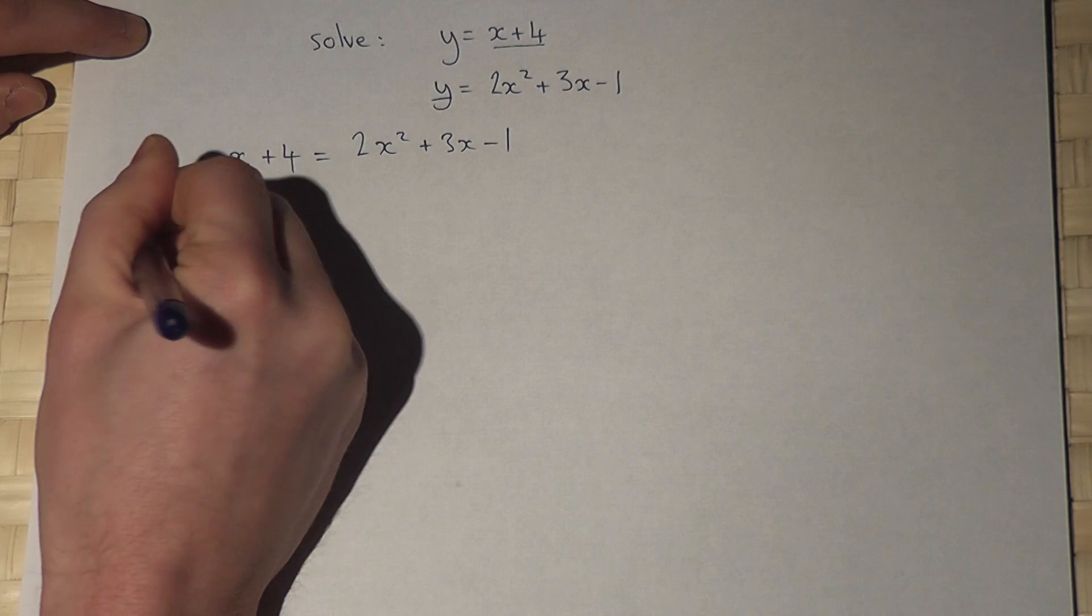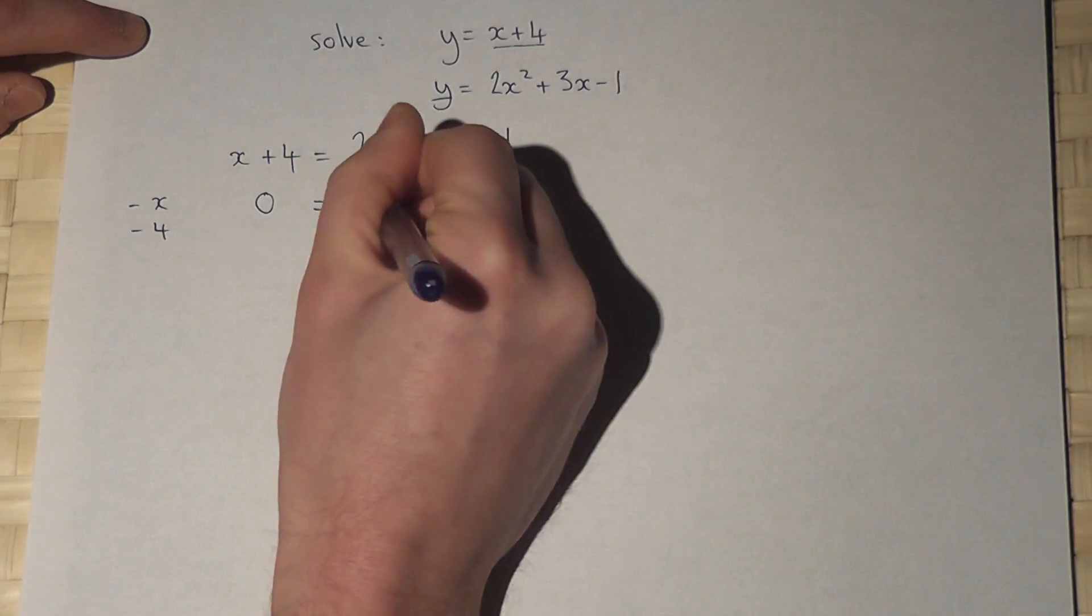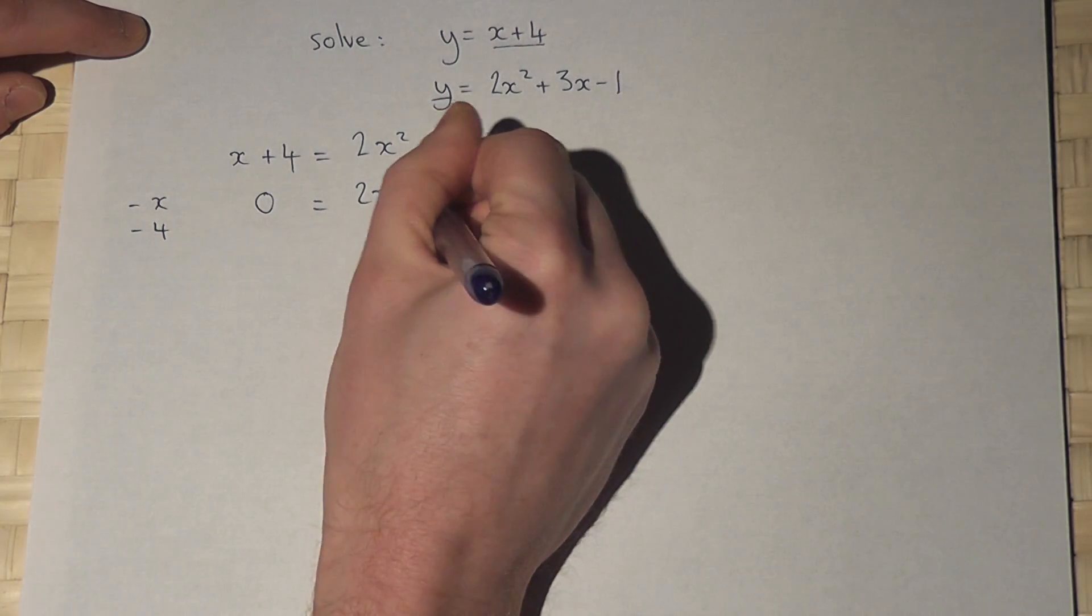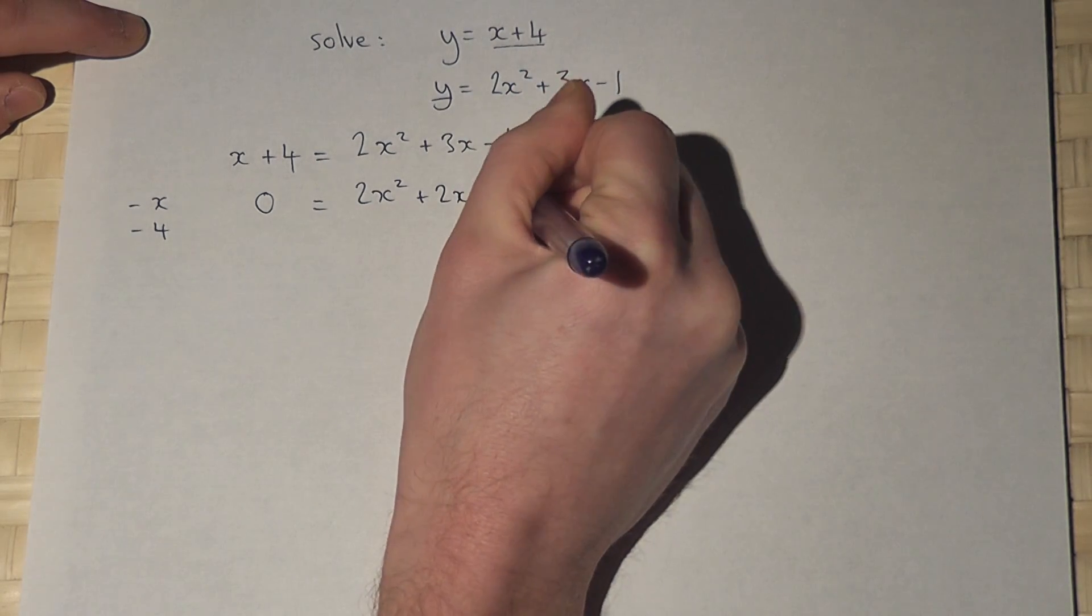So if I take away x and take away 4, I get 0 equals 2x squared. I've taken away x, so I get 2x. And I've taken away 4, so I get minus 5.